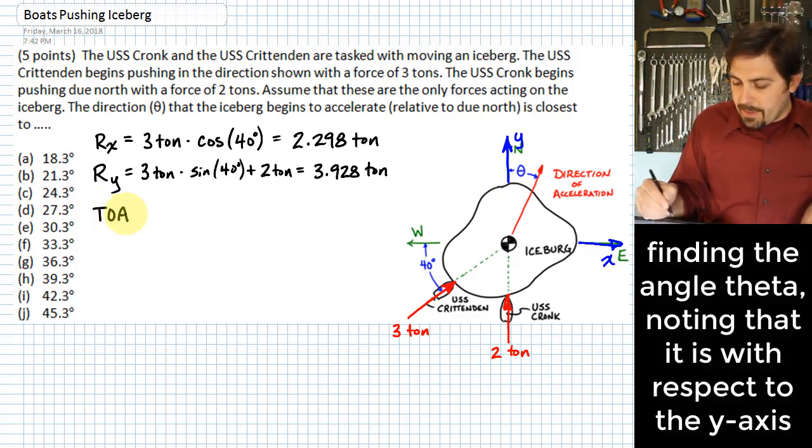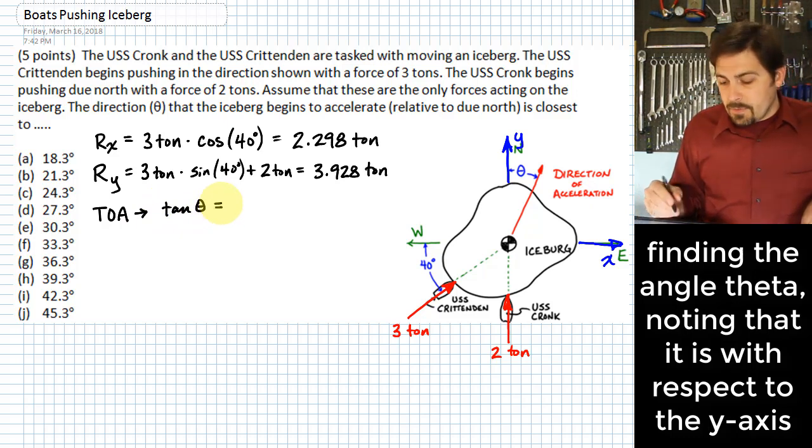In the case of TOA, what we will see here is that the tangent of theta is going to be equal to opposite over adjacent. In this case, the opposite angle to where theta is measured is the x-direction. And so this tells us this is rx. And then we would have the y-direction being the adjacent.